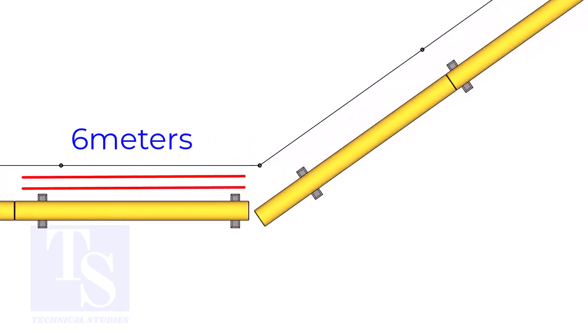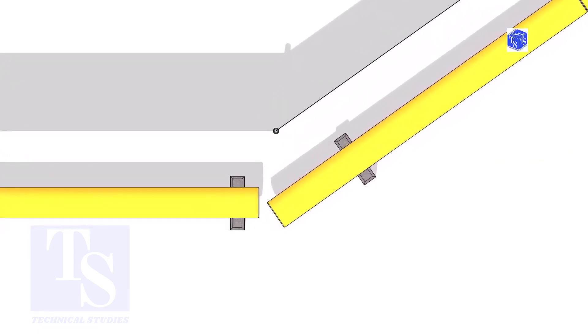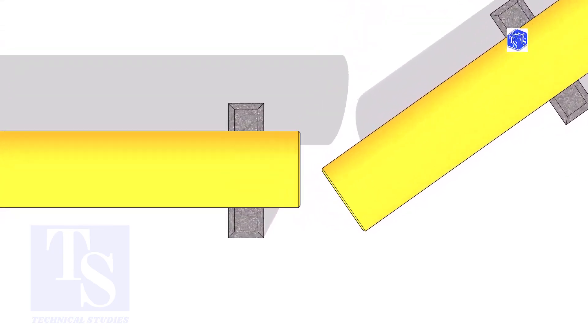The pipe shall be parallel to the fencing, not necessarily the entire length, but at least 6 meters on both sides. Not necessary the center lines of both pipes are in a line.